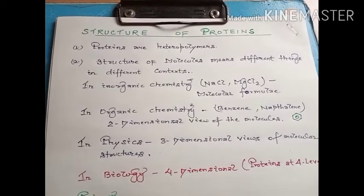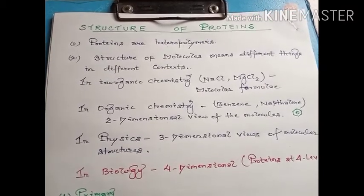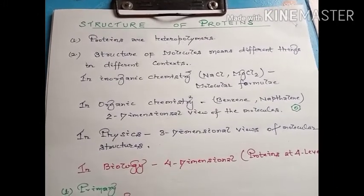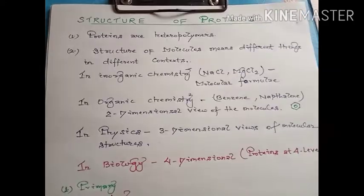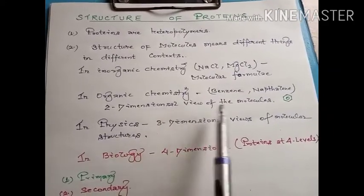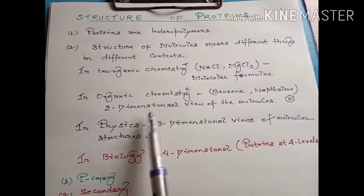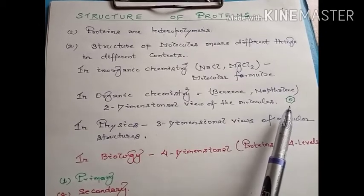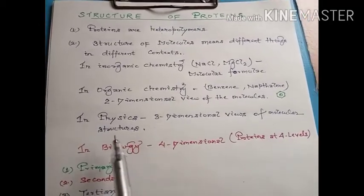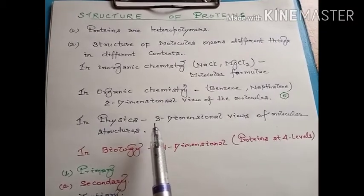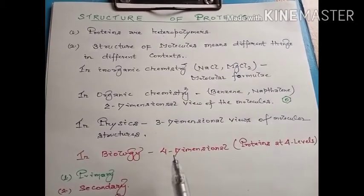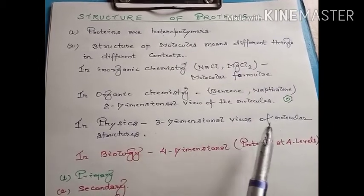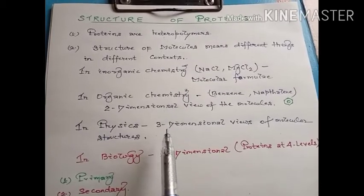For example, in inorganic chemistry we use a molecular formula to show the structure of NaCl or MgCl2. In organic chemistry, for benzene or naphthalene, we use a two-dimensional view to represent the structure. Whereas in physics, it is a 3D aspect — a three-dimensional view of molecular structures is represented.